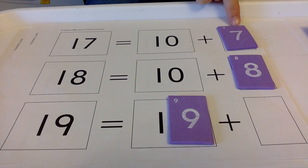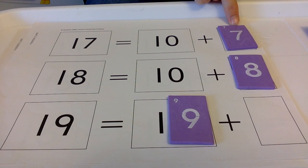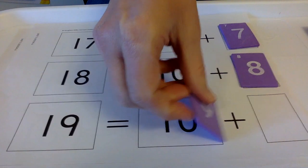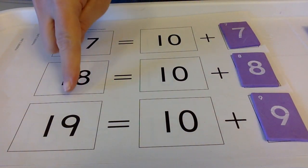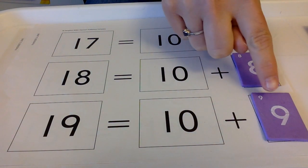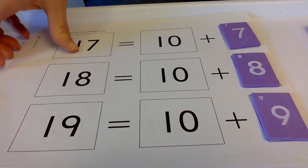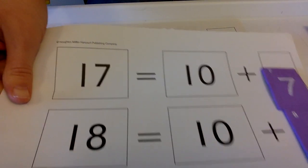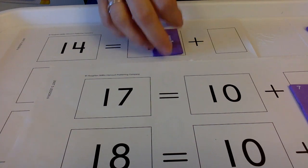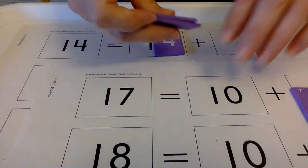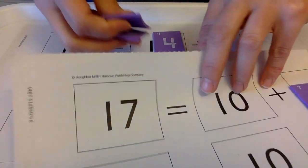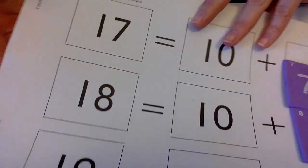19. 19 equals 10 plus 9. Okay, get this next one set up.